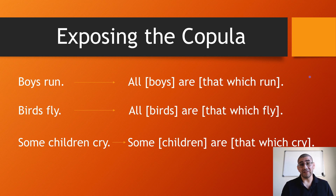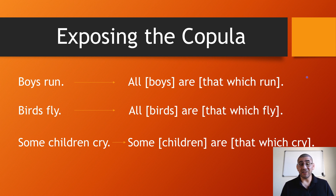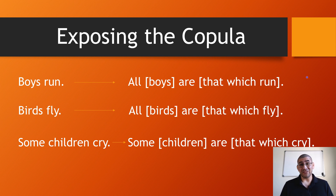Now, exposing the copula — this is what we need to do when we don't see the verb 'to be.' In other words, we don't see 'am,' 'is,' or 'are.' We have to expose it in order to clearly see the subject term and the predicate term. With the simple sentences we're practicing with here, it's easy. But with real sentences found in a book of philosophy, they're not easy like this. So it really helps to develop a habit of seeing the copula.